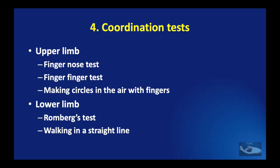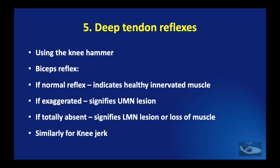If there has been a concomitant head injury, coordination tests can be performed. The three important coordination tests for the upper limb are the finger-nose test, where the patient touches his nose with his index finger using both limbs alternately; the finger-finger test, where the patient touches the index fingers of both hands together; and making circles in the air with the fingers. For the lower limb, Romberg's test and walking in a straight line are performed.